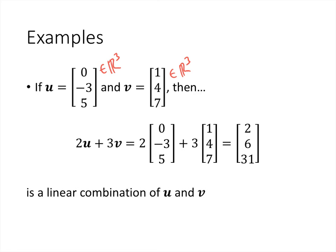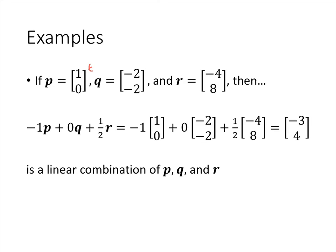As another example, here we have three vectors p, q, and r all in R2, so each has two entries. We need three scalars, one for each vector. The scalars can be any real number — they're allowed to be 0, and they don't have to be whole numbers; in this case one scalar is 1/2. We take each scalar times its vector, add the results, and end up with the vector [-3, 4], which is one of the many possible linear combinations of p, q, and r.